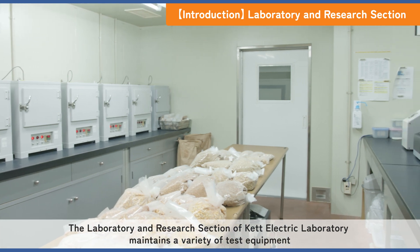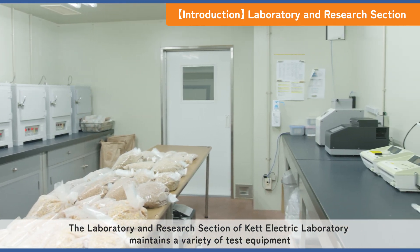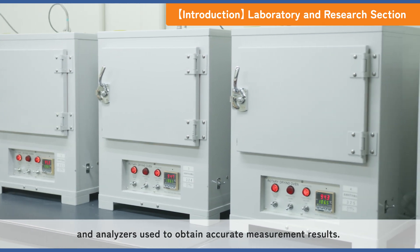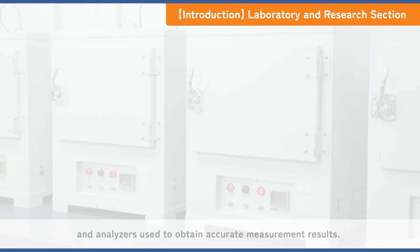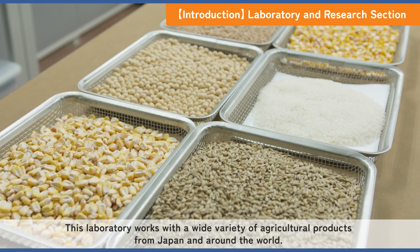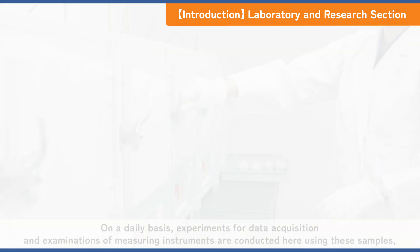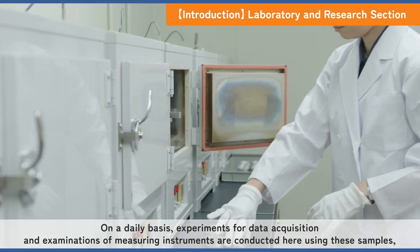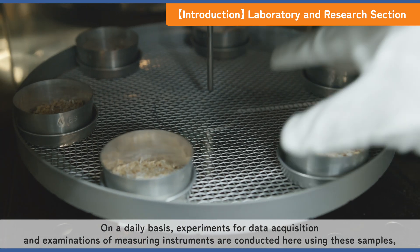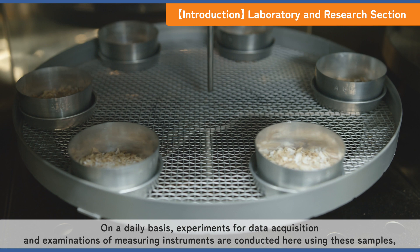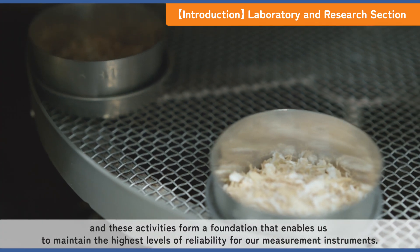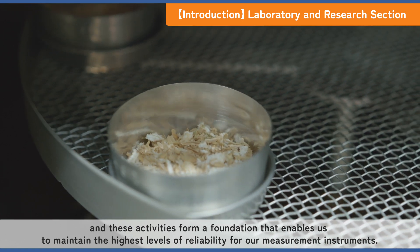The Laboratory and Research section of Kett Electric Laboratory maintains a variety of test equipment and analyzers used to obtain accurate measurement results. This laboratory works with a wide variety of agricultural products from Japan and around the world. On a daily basis, experiments for data acquisition and examinations of measuring instruments are conducted here using these samples, forming a foundation that enables us to maintain the highest levels of reliability for our measurement instruments.